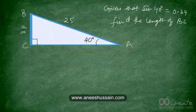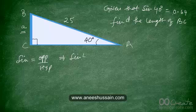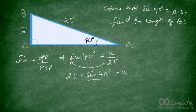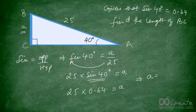Sine of 40 degrees equals a upon the hypotenuse, so sine 40 degrees equals a upon 25. Cross-multiplying: 25 times sine 40 degrees equals a. Since sine 40 degrees is given as 0.64, we get 25 times 0.64 equals a, therefore a equals 16.